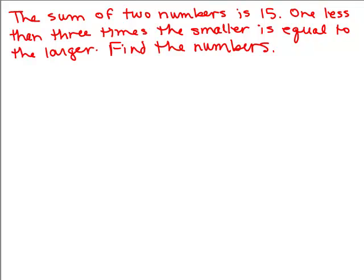We're going to keep working on riddles and puzzles, word problems. Let's look at this particular problem: the sum of two numbers is 15. One less than three times the smaller is equal to the larger. Find the numbers.